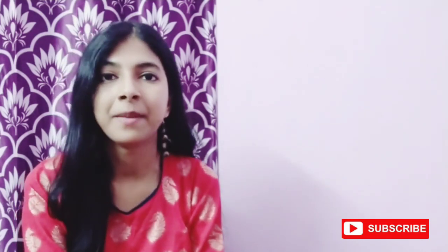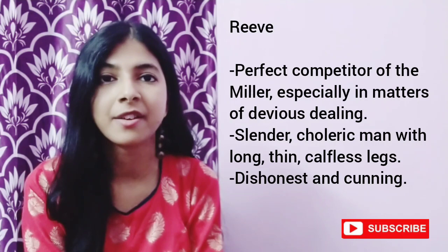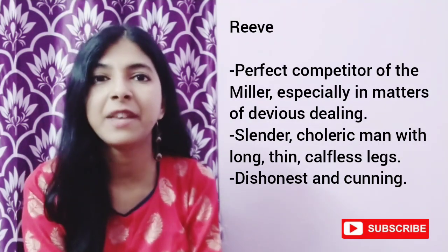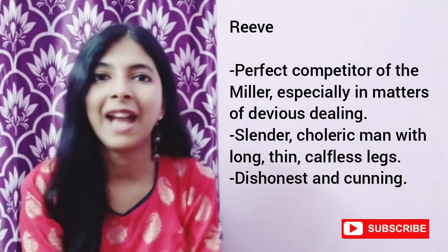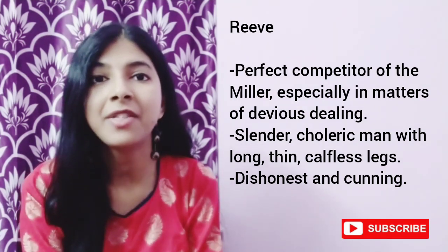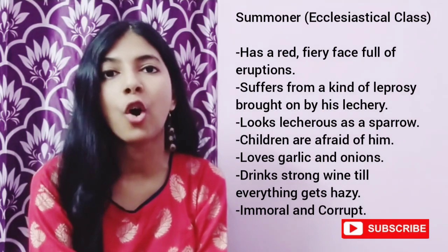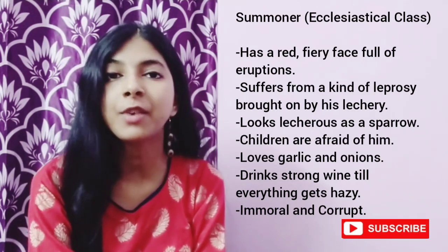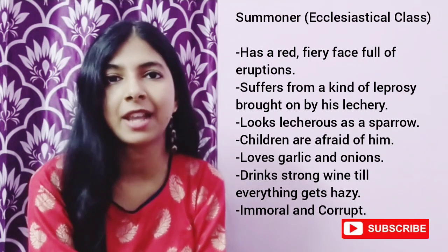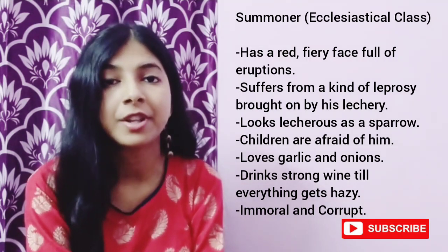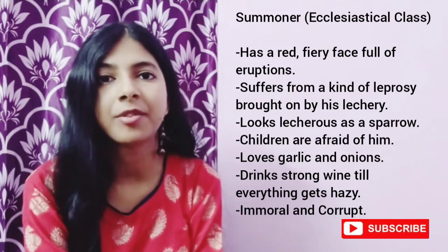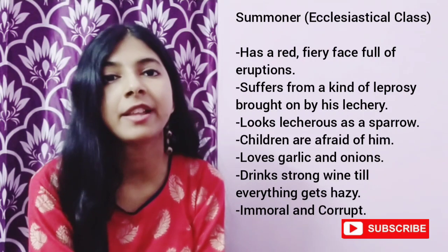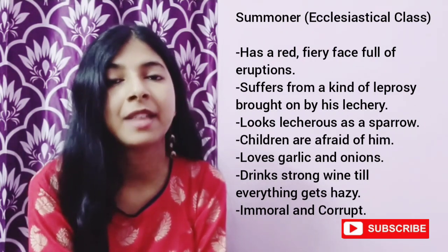The next pilgrim is the Reeve, the perfect competitor of the Miller when it comes to devious dealing. He is cunning, shrewd and a cheat — a slender choleric man with thin, calf-less legs. The next pilgrim is the Summoner. He has a red fiery face full of eruptions, and suffers from a type of leprosy due to his uncontrolled lechery. He is as lecherous as a sparrow, children are afraid of him, he loves garlic and onions, drinks strong wine till everything gets hazy, and is immoral and corrupt.